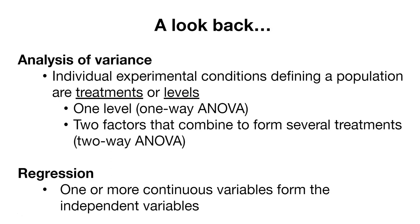We could have two factors that combine to form several different treatments — this would be a two-way ANOVA. In this case, we have a main effect from level one, a main effect from level two, and we might have an interaction effect between level one and level two. And so that's analysis of variance.